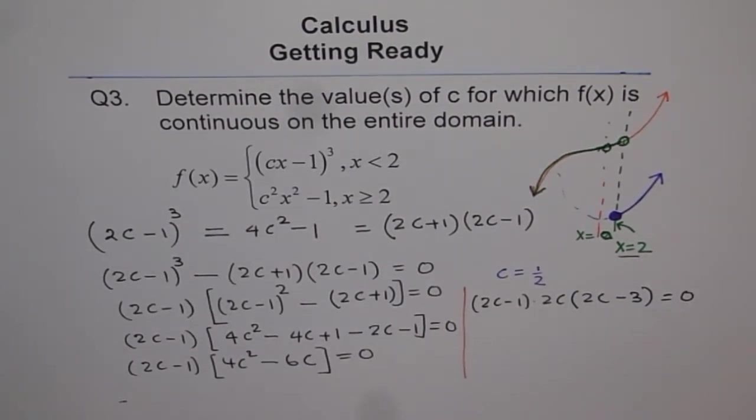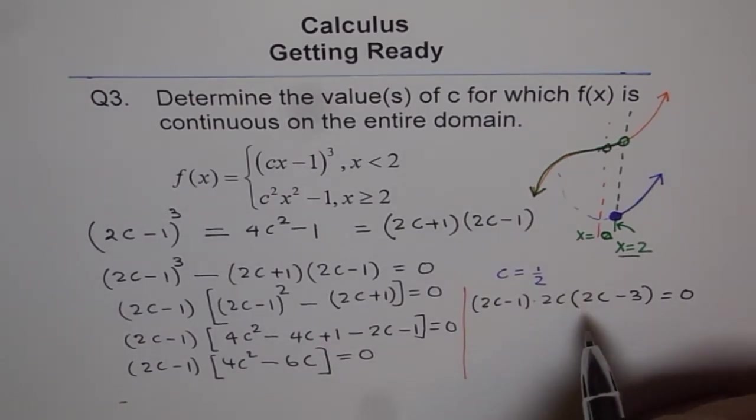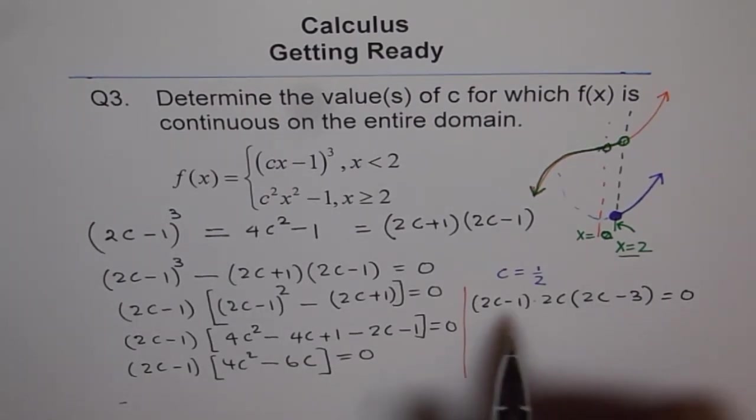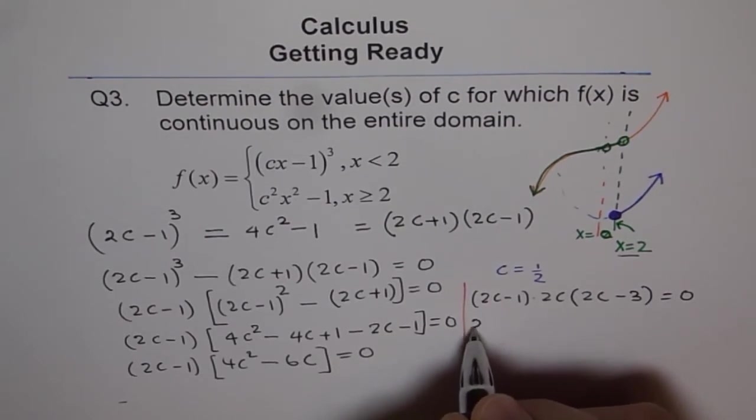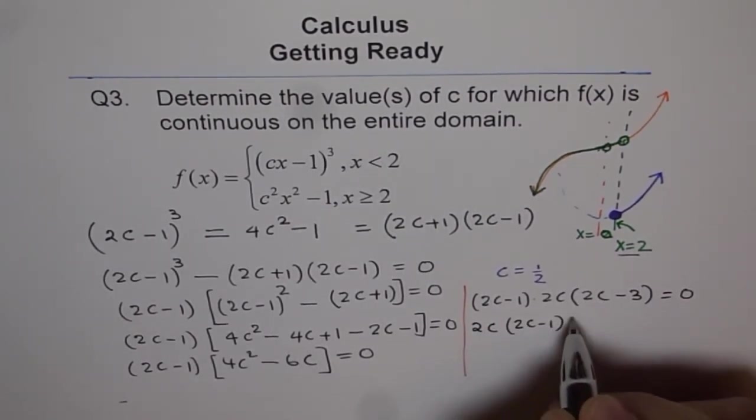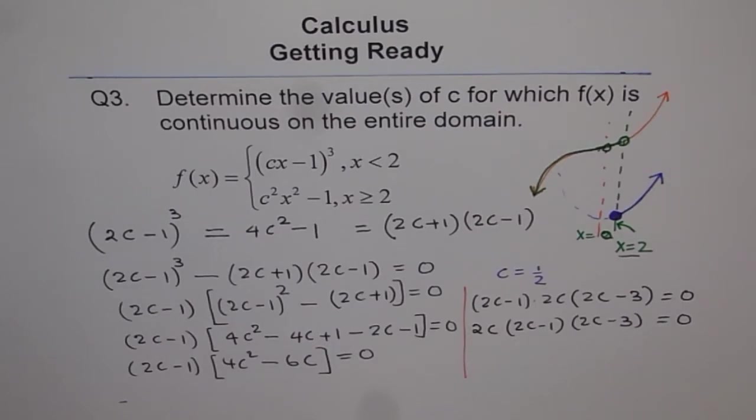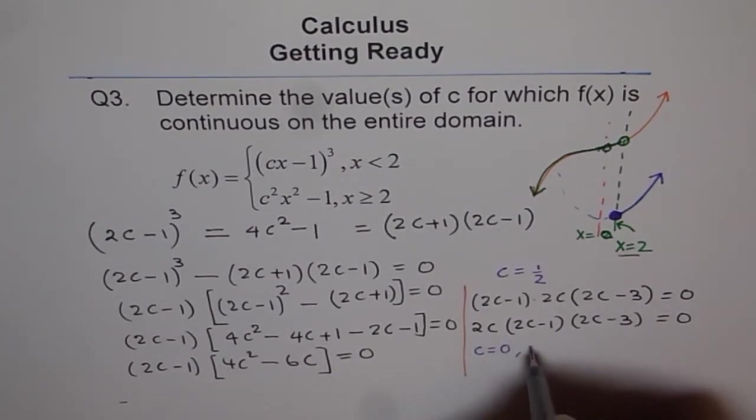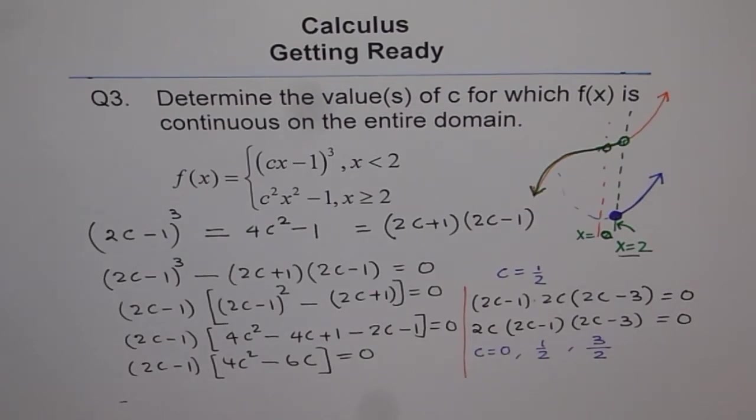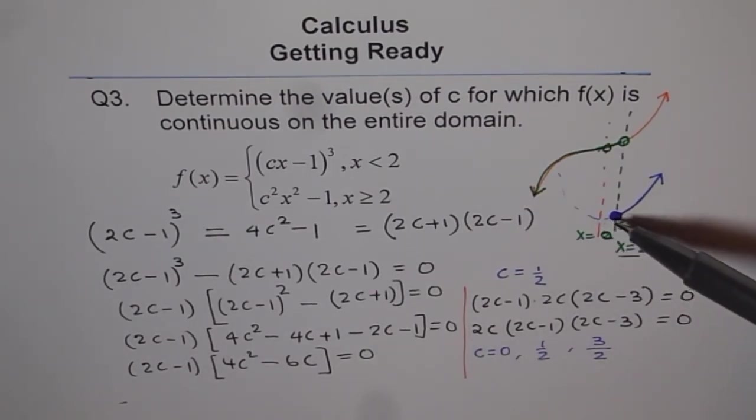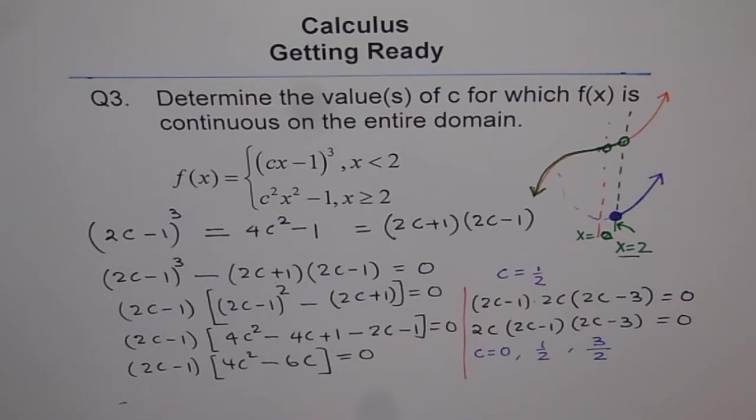We get another value here. I can write this as 2c and then I have (2c - 1) and I have (2c - 3) equals 0. So that gives me a lot of values for which this could be true. One is c equals 0, and here we get equals 1/2, and here we get equals 3/2. So these three values can make this point or this hole plugged in by this. These are all the possible answers for the given question.